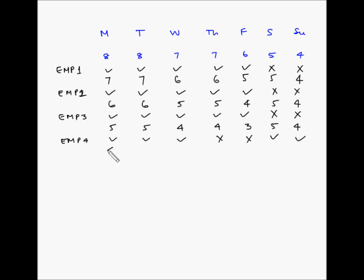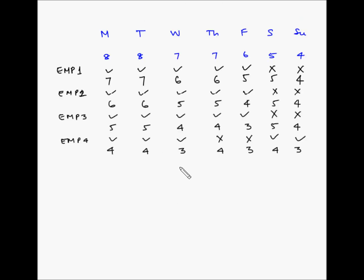The net requirements now become: Monday 4, Tuesday 4, Wednesday 3, Thursday 4, Friday 3, Saturday 4, Sunday 3. Finding the lowest net requirement: 4+4=8, 4+3=7, 3+4=7, 4+3=7, 3+4=7, 4+3=7, 3+4=7. We have multiple pairs all with a net requirement of 7. Since Saturday and Sunday are among them, let's give employee number 5 Saturday and Sunday off.